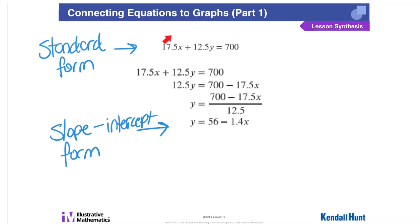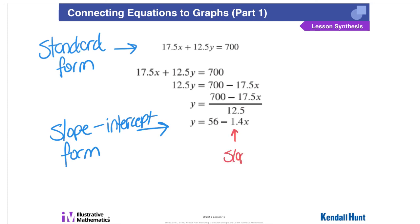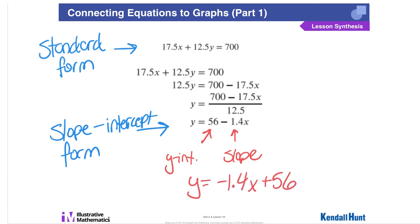Here are a few more notes. Starting with that same equation in standard form, sometimes it's easiest to rearrange it into slope-intercept form so we know the slope and y-intercept. Subtract 17.5x from both sides, then divide both sides by 12.5. That gives 700 divided by 12.5 equals 56, and 17.5 divided by 12.5 equals negative 1.4. In slope-intercept form, the number multiplied by x is your slope, and the other number is the y-intercept. We can rewrite this as y equals negative 1.4x plus 56, which matches the y equals mx plus b form.